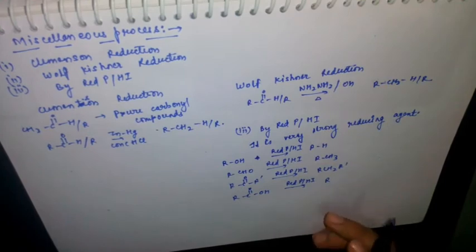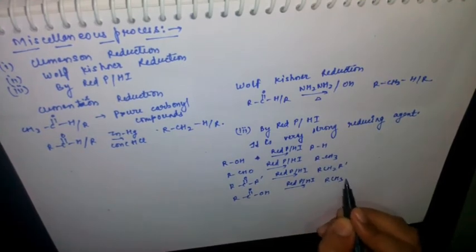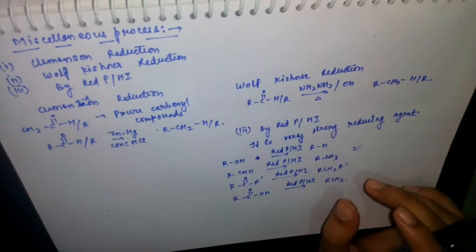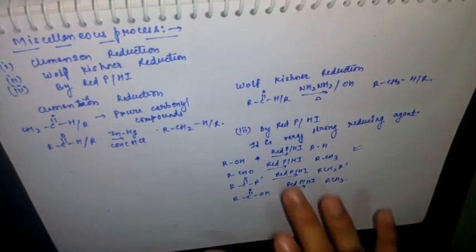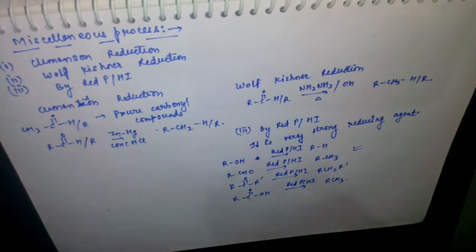Red phosphorus and HI is a very useful reagent and a very strong reducing agent. This is all about the preparation of alkanes from carboxylic acid and miscellaneous methods. In the next video we will talk about preparation of alkynes — till then, thank you.